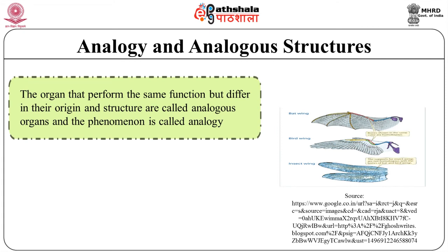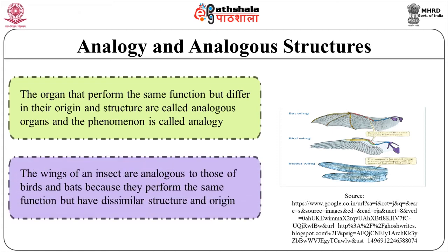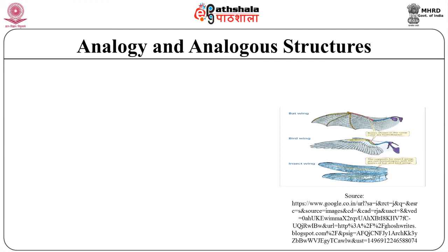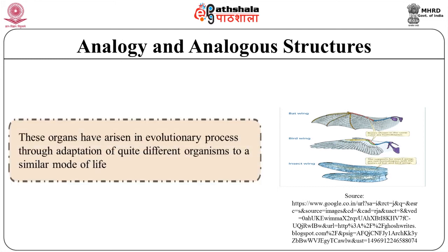Let's come to the next concept of analogy and analogous structures. Organs that perform the same function but differ in their origin and structure are called analogous organs, and the phenomenon is known as analogy. The wings of an insect are analogous to those of birds and bats because they perform the same function but have dissimilar structure and origin. The wings of an insect are modified outgrowths of the body wall, whereas wings of birds and bats are modified forelimbs. These organs have a role in the evolutionary process through adaptation of quite different organisms to a similar mode of life.